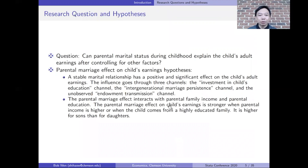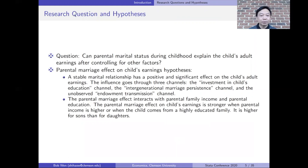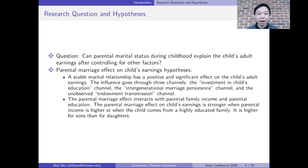I want to answer the question: can parental marital status during childhood explain the child's adult earnings after controlling for other relevant factors? Based on the theoretical model, I introduced the parental marriage effect on child's earnings hypothesis. The main idea is that a stable marital relationship has a positive and significant effect on the child's adult earnings.